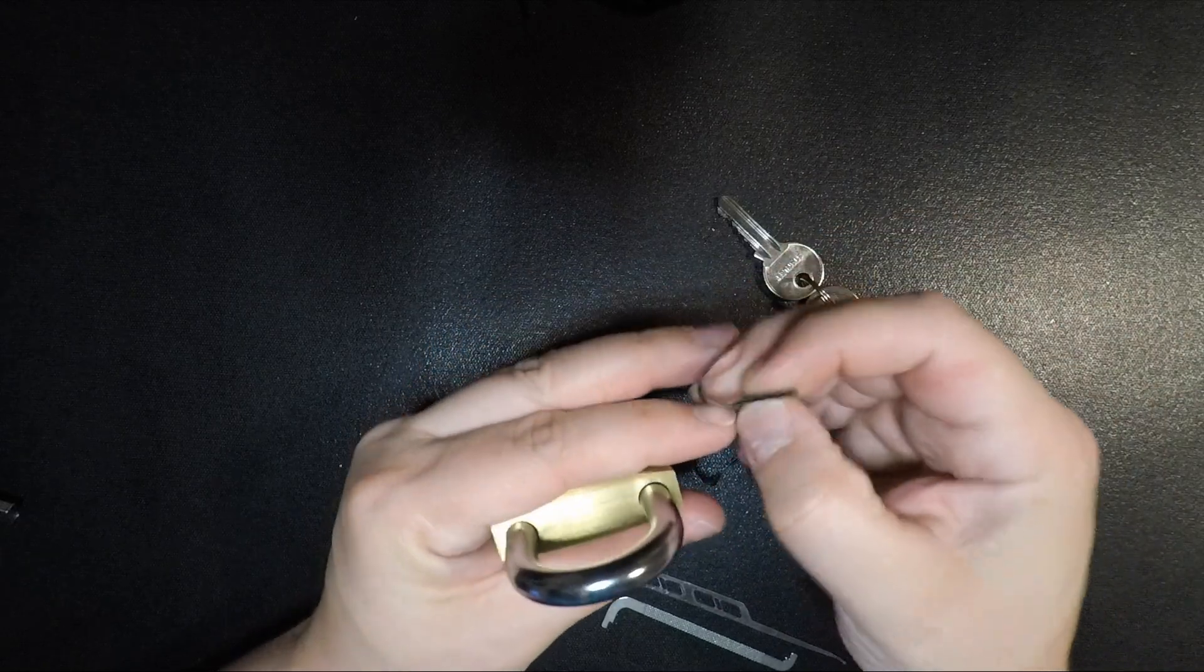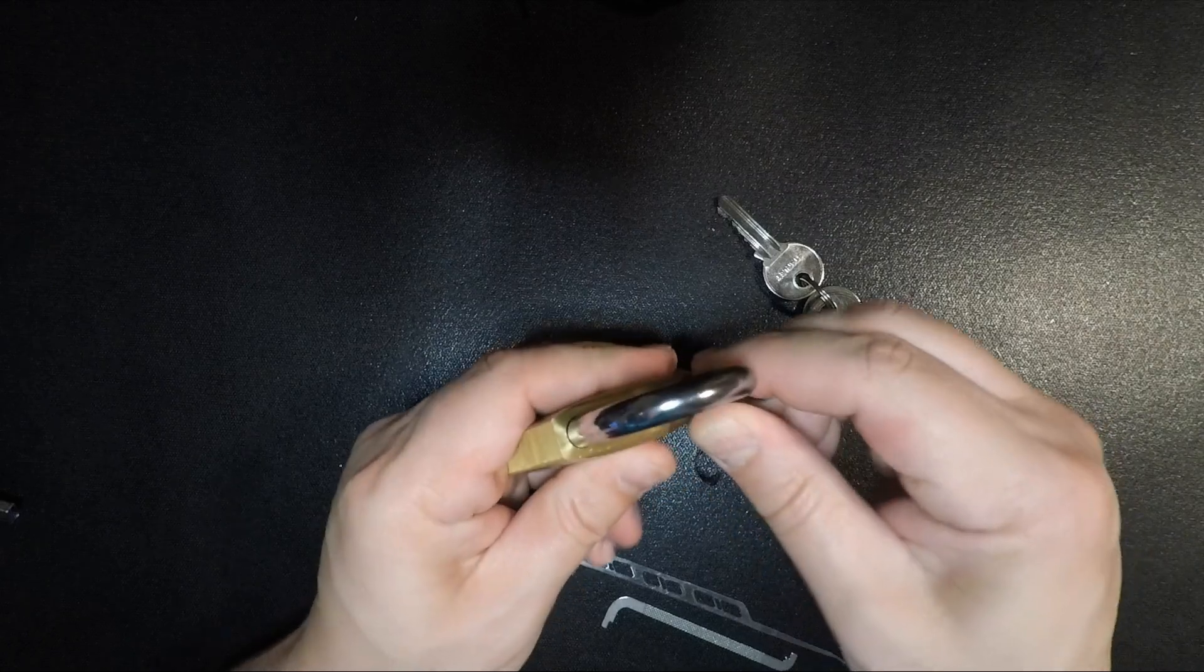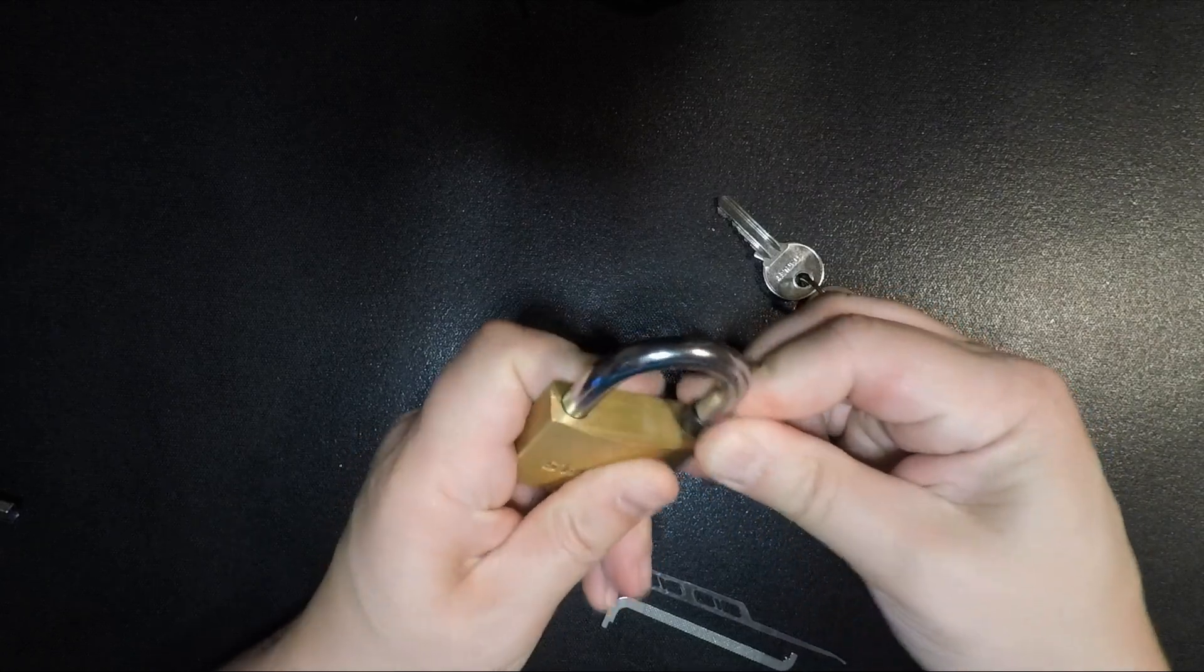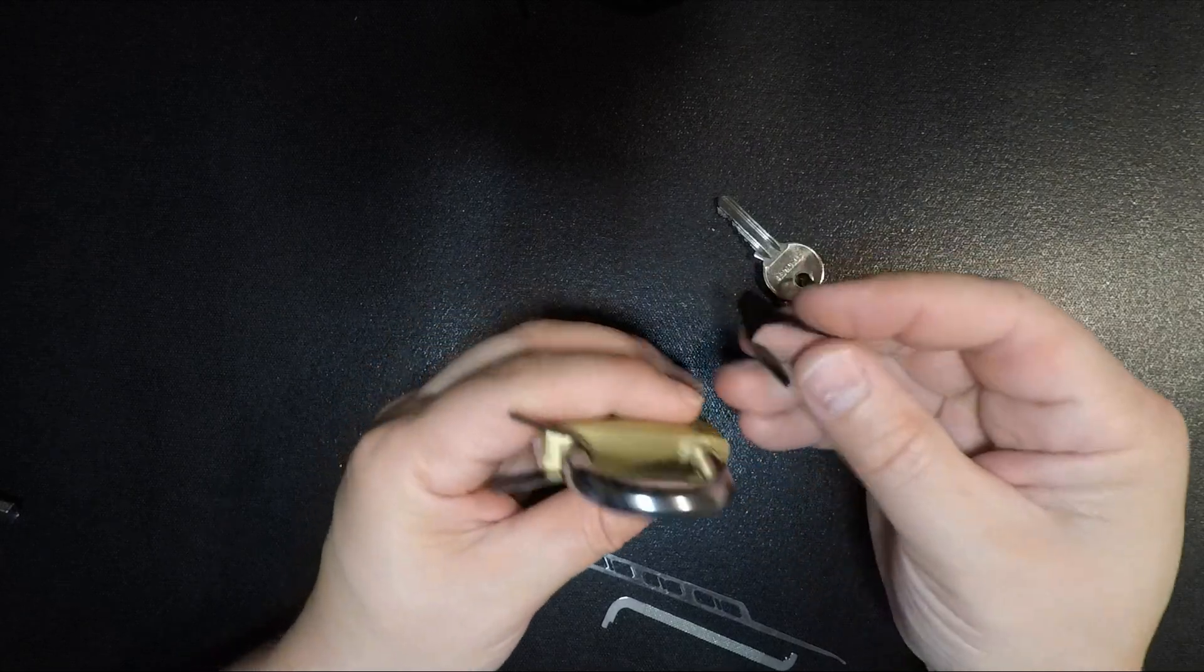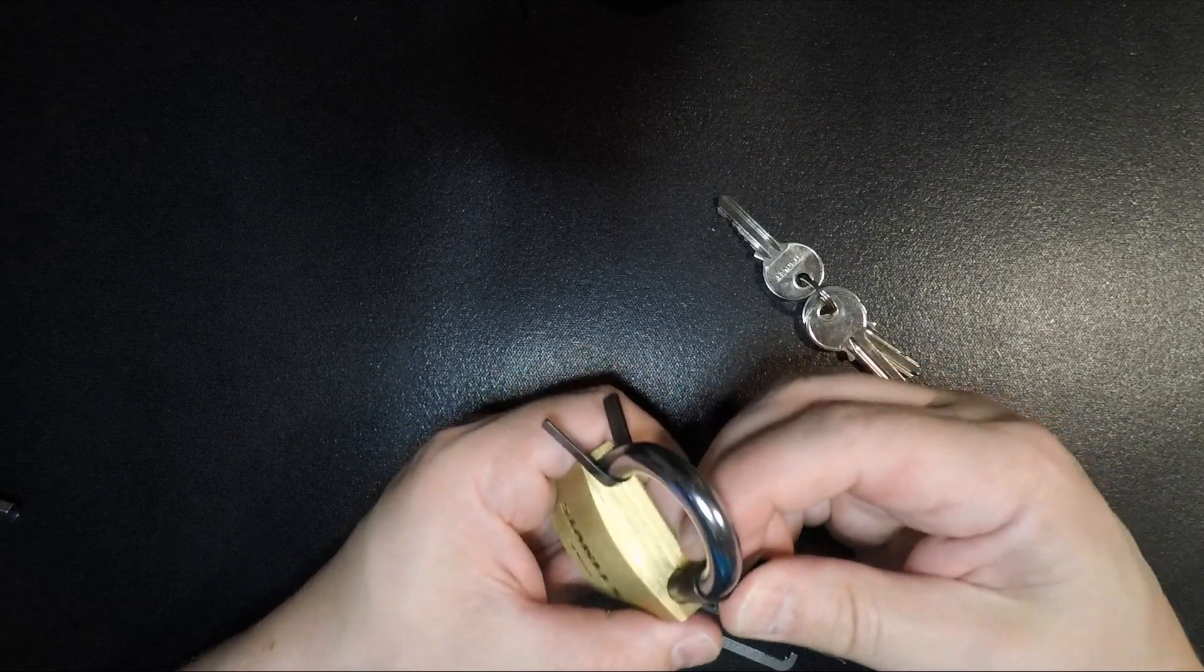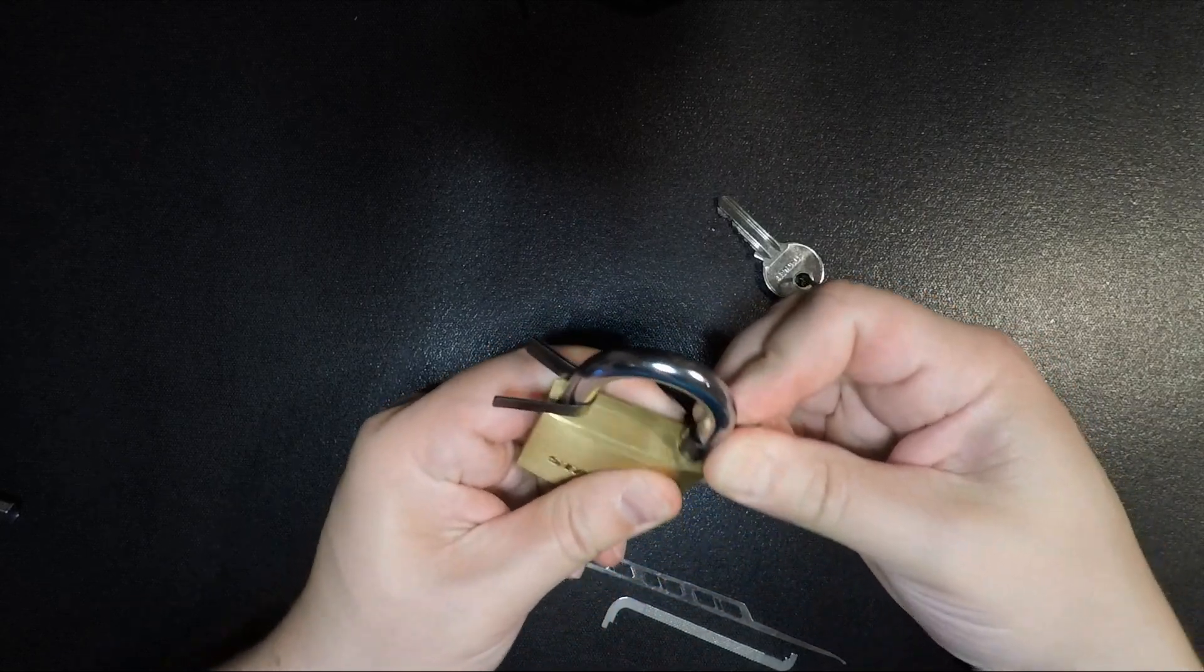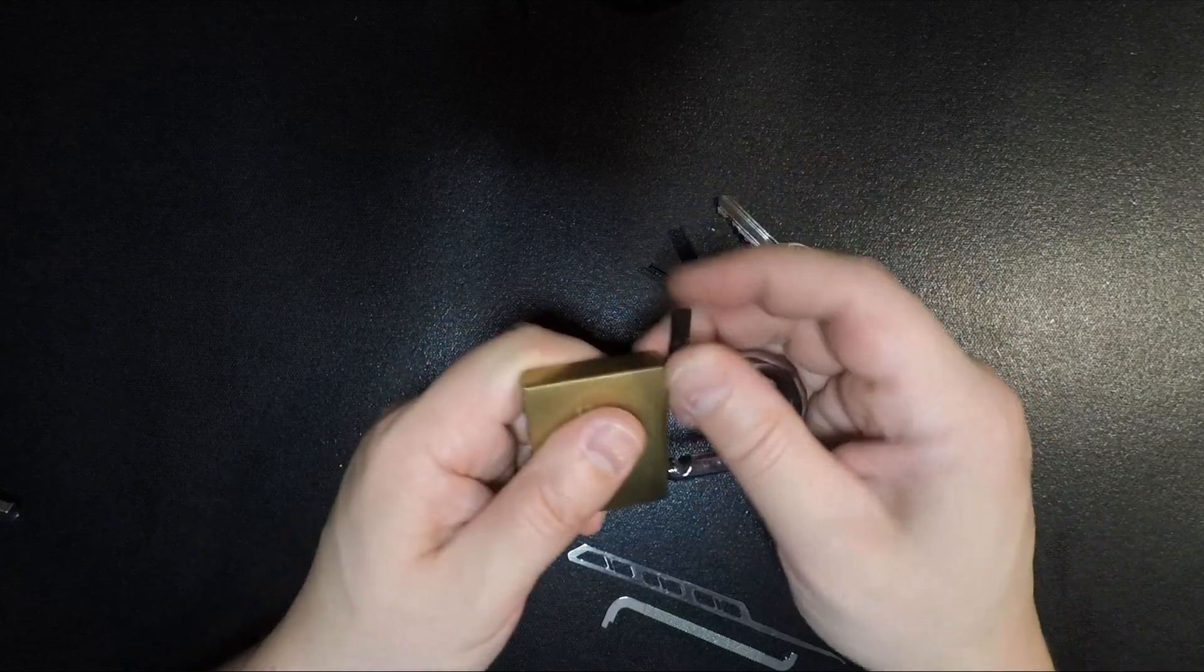So, just demonstrate that now with a couple of shims I have here. Just kind of work those in and push that locking pawl out of the way on that side. Same thing on the other side. Just kind of work that in and move that locking pawl out of the way. And we can pop this open.